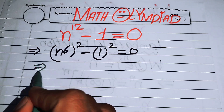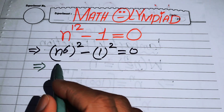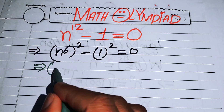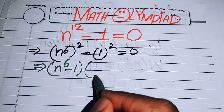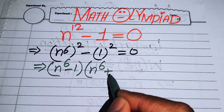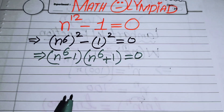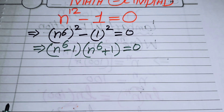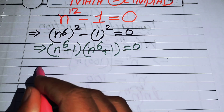In the next step we will use the well-known difference of squares identity. You know that if we have a squared minus b squared equals 0, we can write it as n to the power of 6 minus 1 times n to the power of 6 plus 1 equals 0.